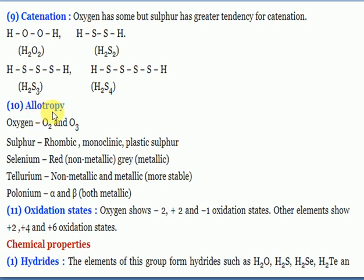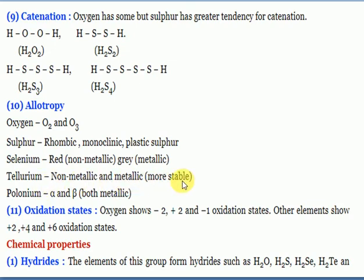Allotropes are forms of an element with the same chemical properties but different physical properties. Oxygen allotropes are O₂ and O₃ (ozone). Sulfur allotropes include rhombic sulfur, monoclinic sulfur, and plastic sulfur. Selenium has red and gray allotropes. Tellurium has non-metallic and metallic allotropes. Polonium has alpha and beta allotropes, both metallic.